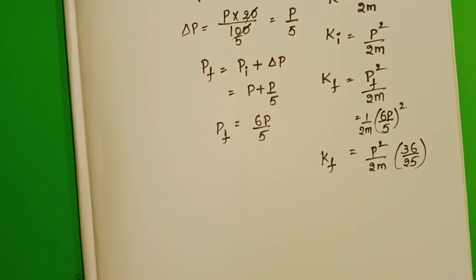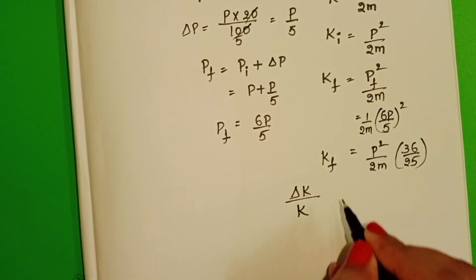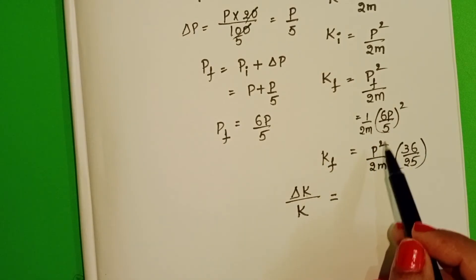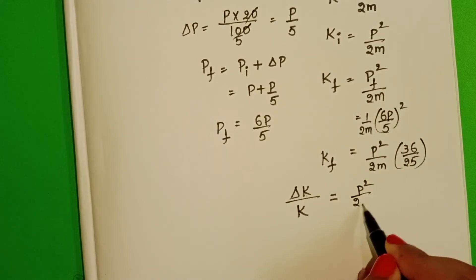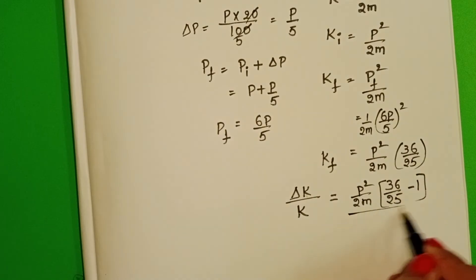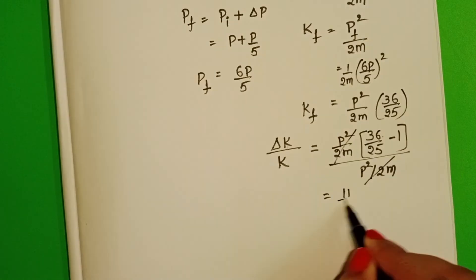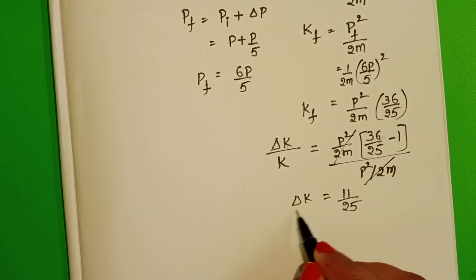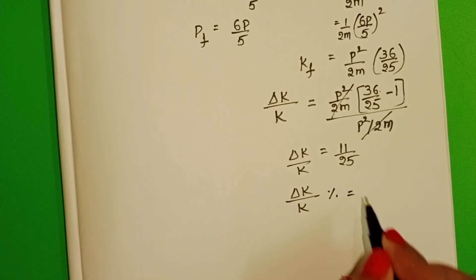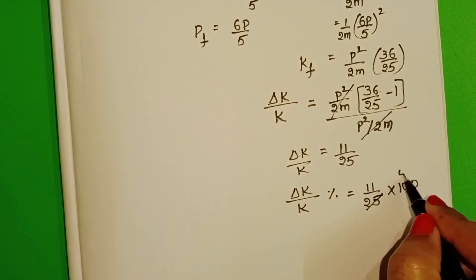Now calculate the increase in kinetic energy. The change in kinetic energy divided by initial kinetic energy equals final kinetic energy minus initial kinetic energy over initial kinetic energy. The P squared by 2m terms cancel, giving 11 by 25, so the kinetic energy increases by 44%.